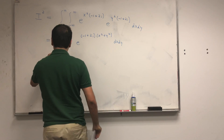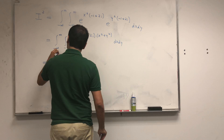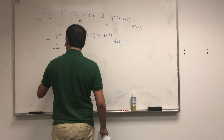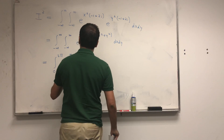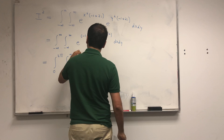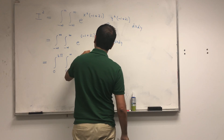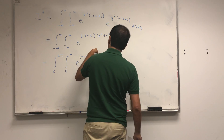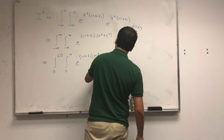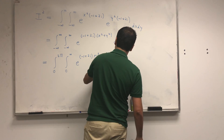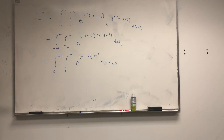As usual, x squared plus y squared calls for polar coordinates, so let's write this in polar coordinates. The angle goes from 0 to 2π, and the radius from 0 to infinity: e to the minus 1 plus 2i times r squared, times r dr dθ. Oh my god, there's an r — very important.